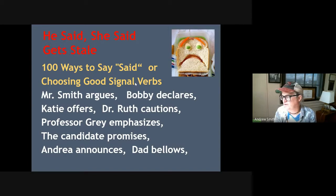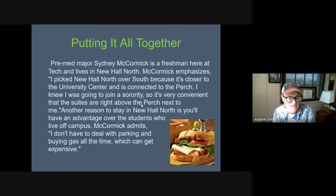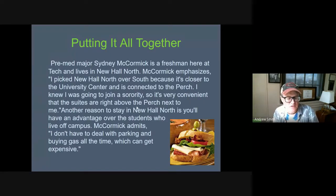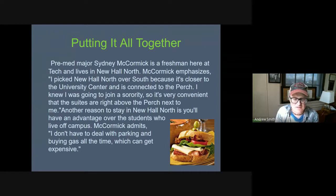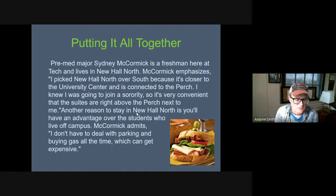This is an overlapping paper between an English paper and a journalism paper. In journalism, they tend to use "said" in the past tense. In an English paper, they tend to use present tense, place the signal phrase before the quotation, and use more than just the word "said." Here's a profile example about Newhall North: "Pre-med major Sidney McCormick is a freshman here at Tech." You name who you're talking to with first and last name, give context, and then use a signal phrase like "McCormick emphasizes," followed by her quote and a follow-up sentence.